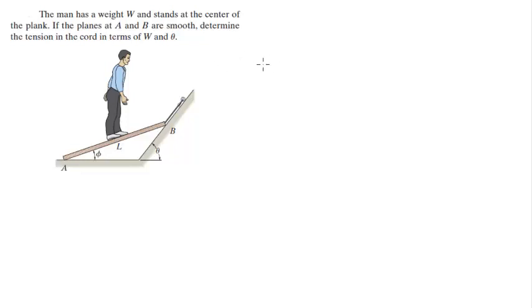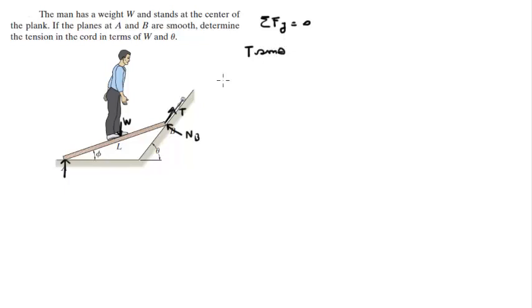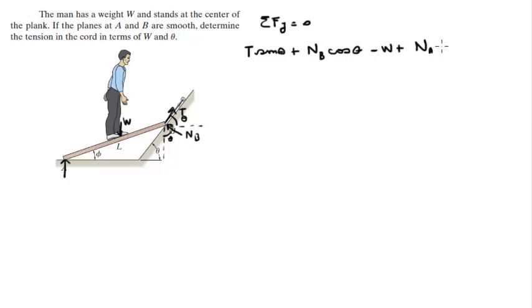The last equation I'm going to form is the sum of the forces in the y-direction. In y, you've got the tension component going up, the normal at B has a component going up, the weight is coming down, and the normal at A is coming up. So: T·sin(theta) plus NB·cos(theta) minus W plus NA equals 0.